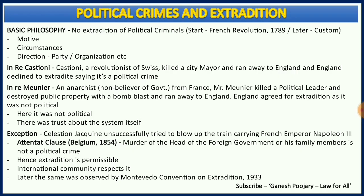An important exception for political crime: if someone tries to kill a foreign government leader or his family members, that is not considered a political crime. This principle is based on the Attentat clause, which originated in Belgium in 1854 when Celestine Jacqueline tried to kill French Emperor Napoleon III while he was traveling on a train. The clause states that attempting to kill a foreign government leader or family members can result in extradition, and this is now customary international law, also observed by the Montevideo Convention on Extradition in 1933.